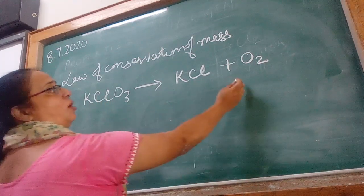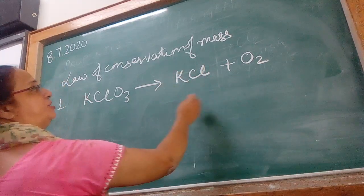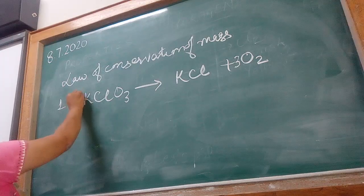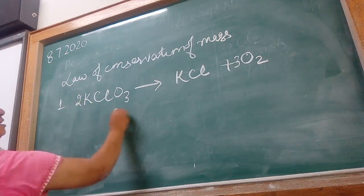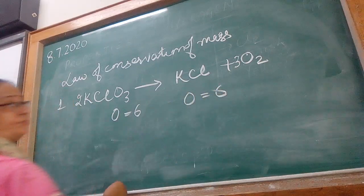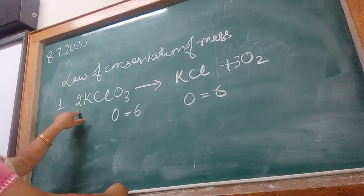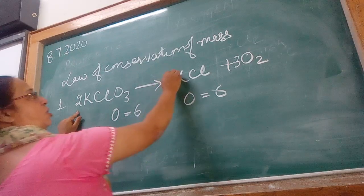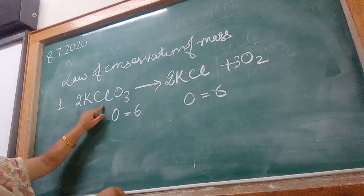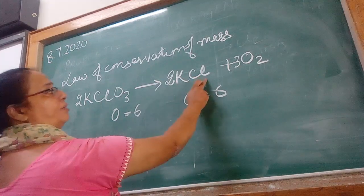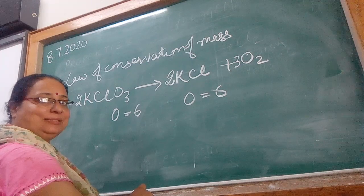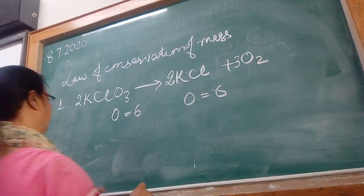So we start with oxygen. To balance oxygen, we make it 6 — putting 3 on one side and 2 on the other. Now oxygen is 6 on both sides. Next, let me balance potassium: 2 potassium on each side. Then chlorine: 2 chlorine are already there. So this equation is balanced using the hit and trial method.